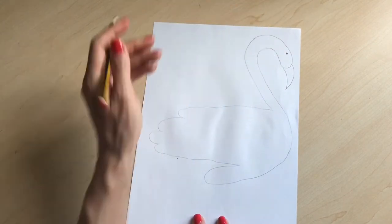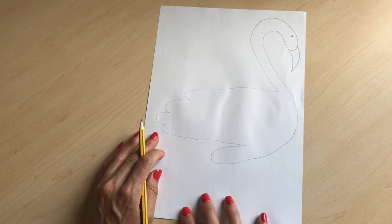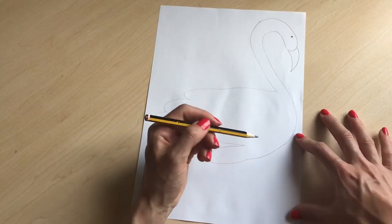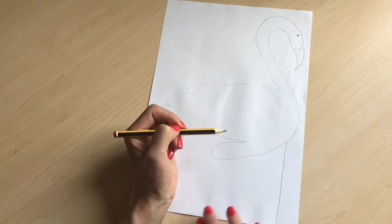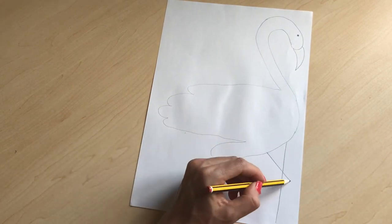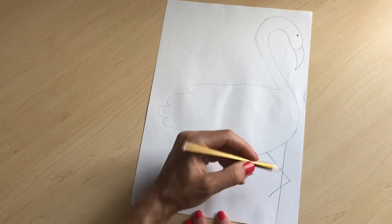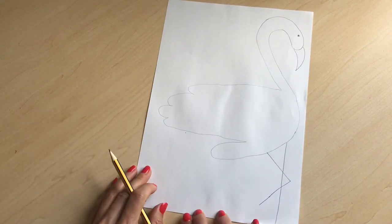For the legs, they've got very skinny legs, so you're just going to do a line down like that, and then this one's going to come out like that.